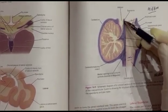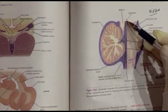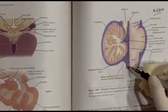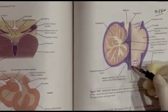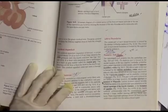Superiorly, it is continuous with the cerebral aqueduct of the midbrain, and inferiorly, it is continuous with the central canal of the spinal cord. It is lined by ependyma.